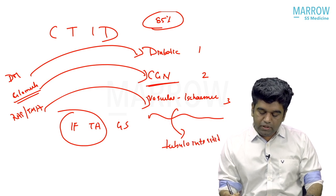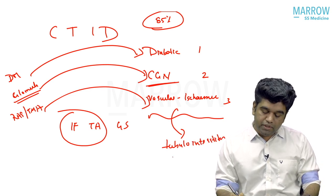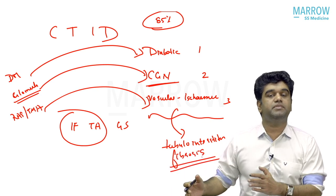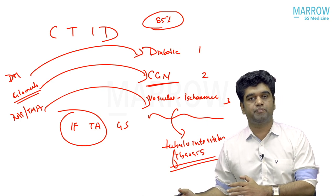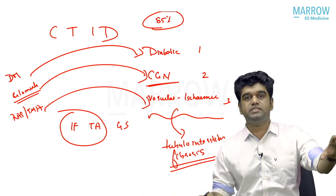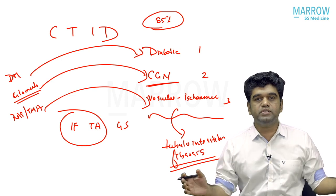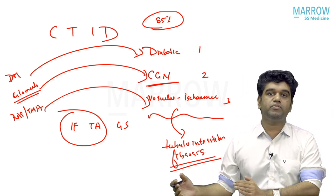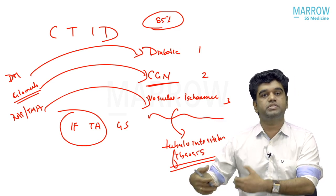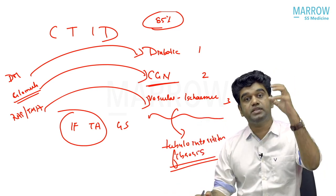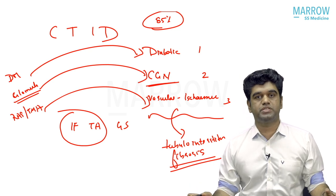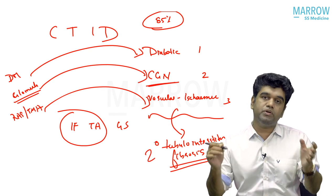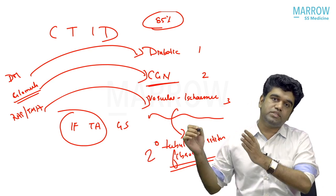The moment you say it is CKD, there should be tubular interstitial fibrosis. Without tubular interstitial fibrosis, you cannot call it CKD because 85% of the kidney is made up of tubular interstitium. FSGS with completely sclerosed glomeruli cannot per se be called CKD — that sclerosis must secondarily involve the tubular interstitial compartment to produce tubular interstitial fibrosis. So these conditions produce secondary tubular interstitial fibrosis, and that is what is called CKD.